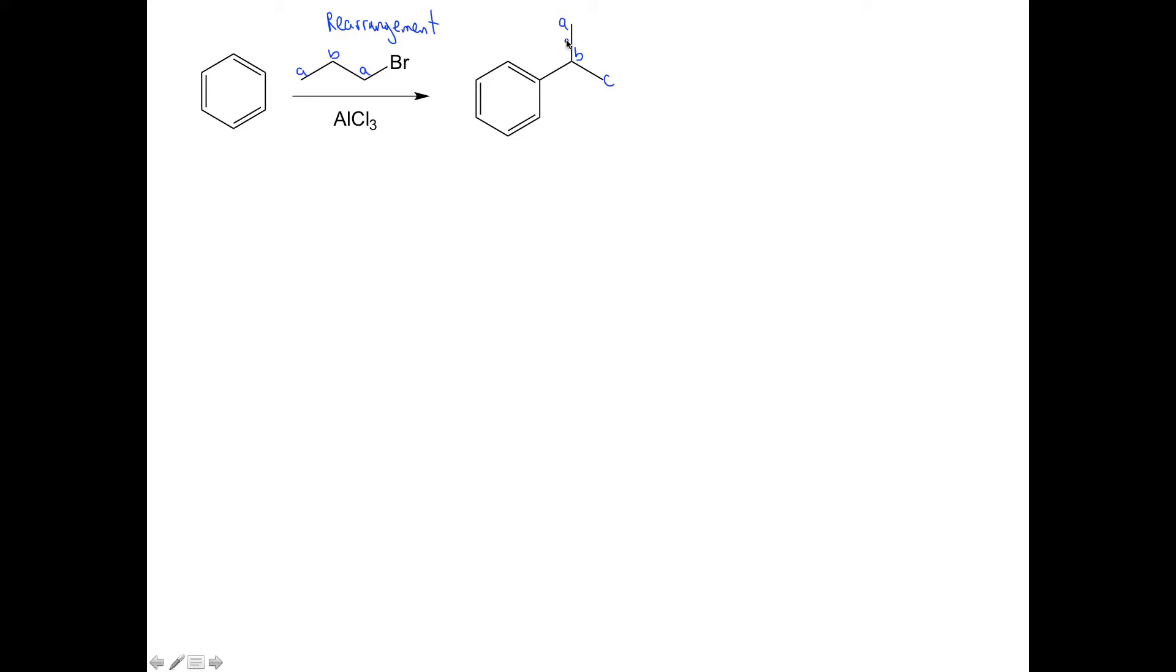So from the Friedel-Crafts alkylation reaction, we know we normally form a new bond to the carbon atom that was connected to the halogen, and that's not the case here. So clearly a rearrangement is occurring. So let's go through this mechanism so we can understand and see this rearrangement.